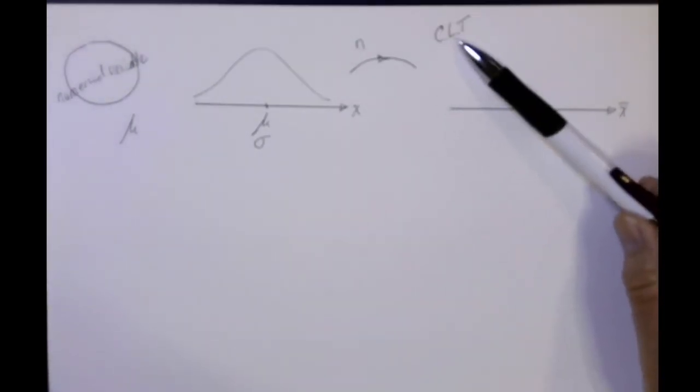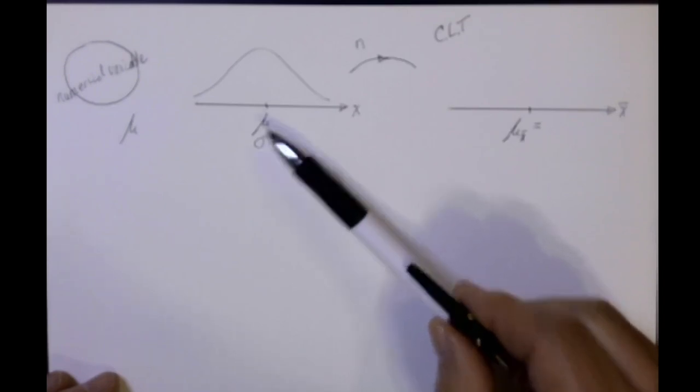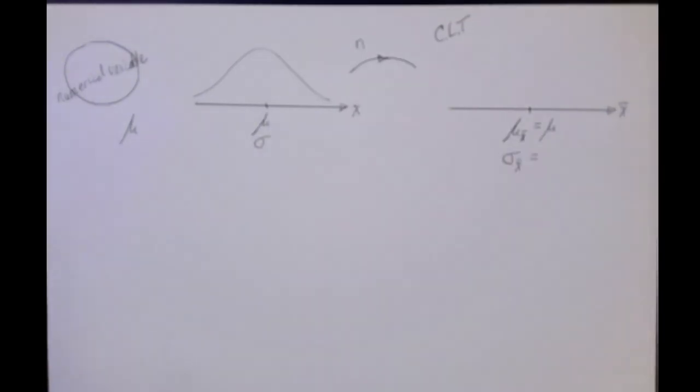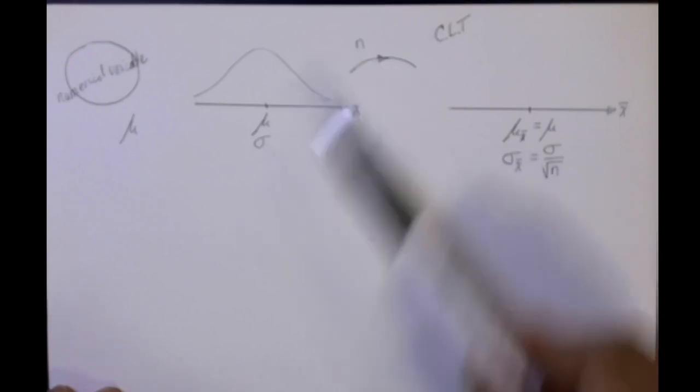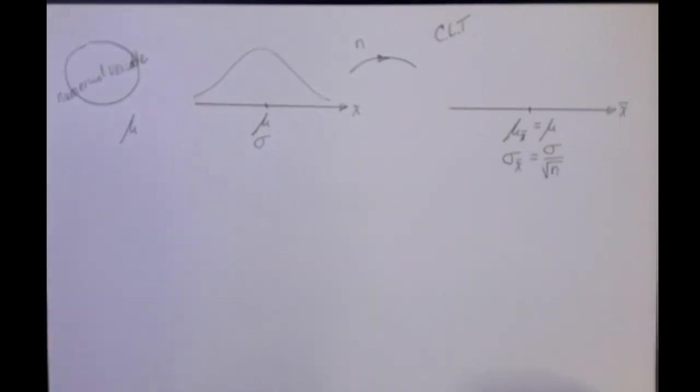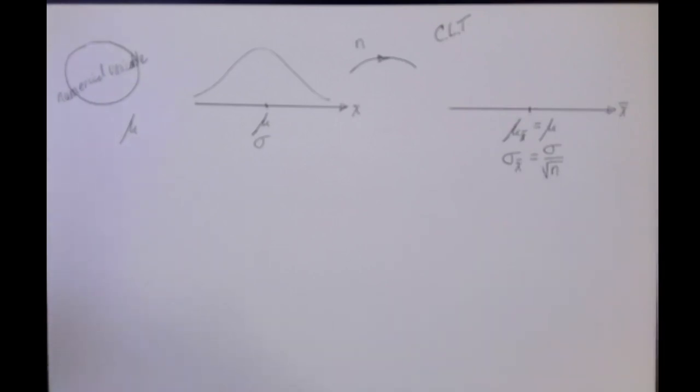The central limit theorem, CLT, tells us three important things about the distribution of these sample means. First, the mean of all of the sample means will be equal to the mean of this original population. The standard deviation of all of these sample means will be the standard deviation of the original population divided by the square root of n. The third fact that the central limit theorem tells us is something about the shape of this distribution of the x-bars.